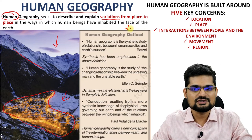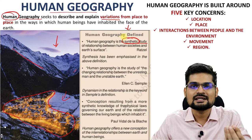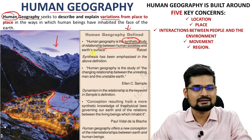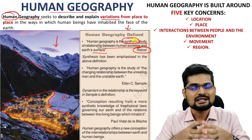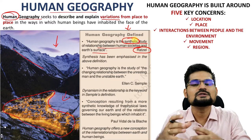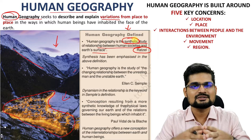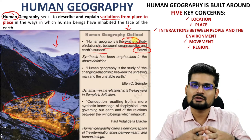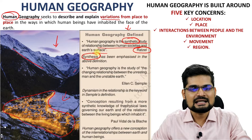If you observe these definitions, human geography is this synthetic study. Here something is synthesized — which is not there but created. So, synthetic study of relationship between human societies and earth's surface, according to Ratzel. We have learned about Ratzel's concept in German geographers. If you have not studied, go to the playlist on evolution of geographical thought where you can learn about various schools of thought — German, French, British, American, Indian — and how people have defined geography and conceptualized various concepts. Synthesis has been emphasized here.